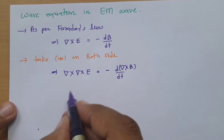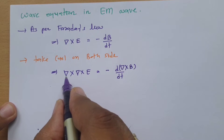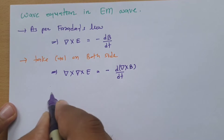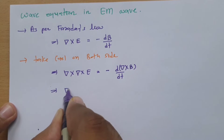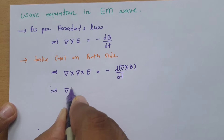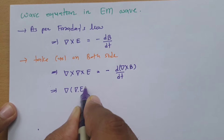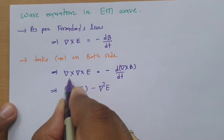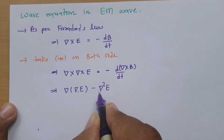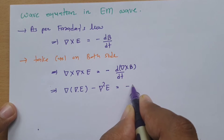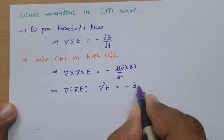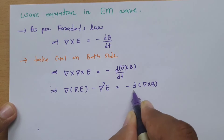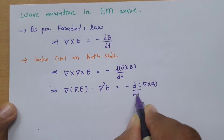Now if you see del cross del cross E, this is practically del of del·E minus del squared E. So that equals minus d/dt of del cross B.